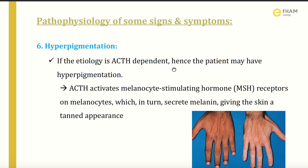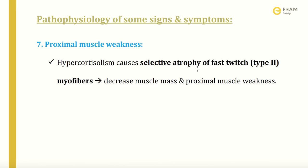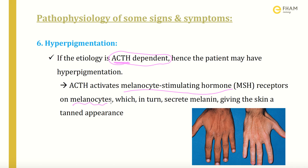The sixth sign is hyperpigmentation. Hyperpigmentation is not found in all Cushing Syndrome patients — it is only produced when the etiology is ACTH-dependent, because hyperpigmentation is caused by the ACTH hormone. ACTH activates MSH receptors on melanocytes. When these MSH receptors on melanocytes are stimulated, melanin is secreted, giving the skin a tanned appearance. Some components of ACTH also directly contribute to melanocyte activation.